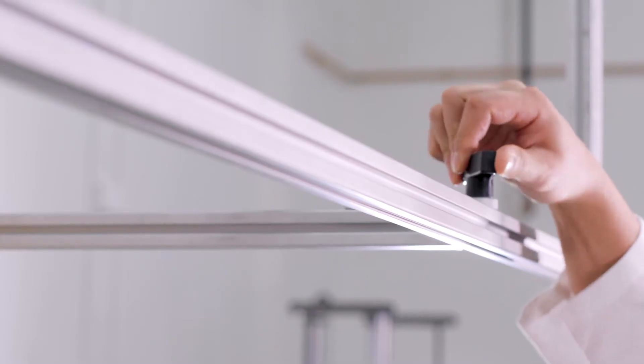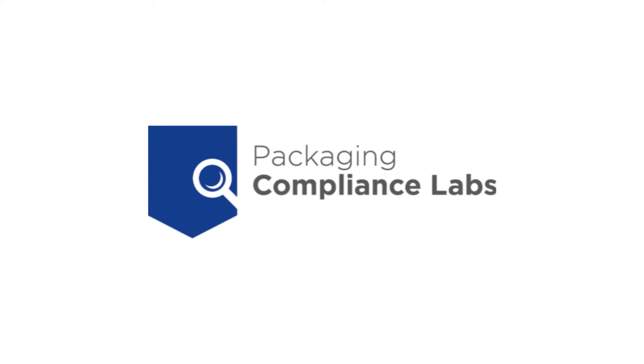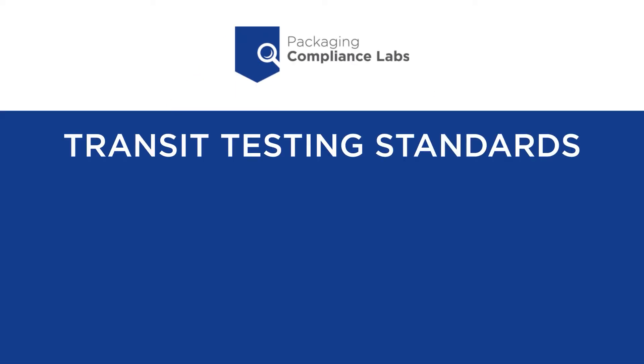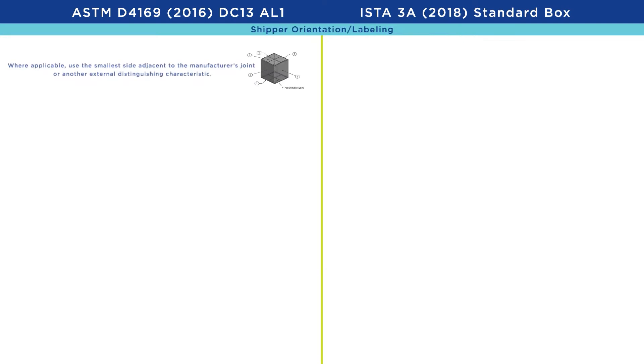There are two standards that we use at PCL for transit testing. Those standards are ASTM D4169 and ISTA 3A. In this visual, we will point out some of the differences and similarities between ISTA and ASTM. Shipper orientation and labeling is different for each standard.